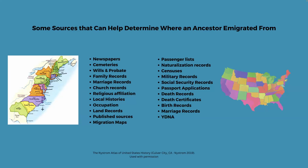Here's a list of several sources that can help determine where an ancestor was born or immigrated from. I'm focusing on Jonathan Tipton, who lived during colonial times in the 1600s and 1700s. The records on the left are going to be more helpful for this time period: newspapers, cemeteries, probate, family records, marriage records usually in the church, religious affiliation, histories, occupation, land records, published sources, and migration maps.